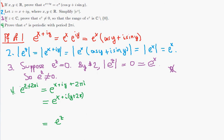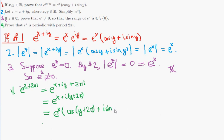Let me get rid of the endpoint because we're going to need a little extra space. By the first property, this is equal to e to the x times cosine of y plus 2π plus i sine of y plus 2π. Now cosine and sine of real numbers are periodic with period 2π, so we can simply drop the extra 2π. This gives e to the x times cosine y plus i sine y.